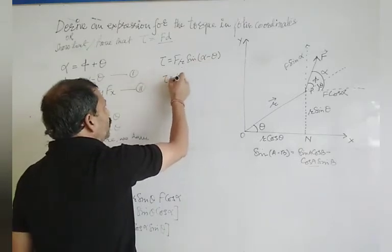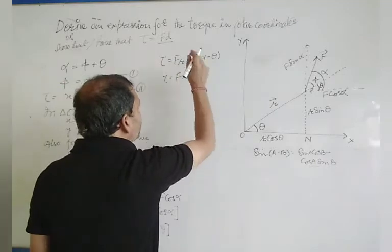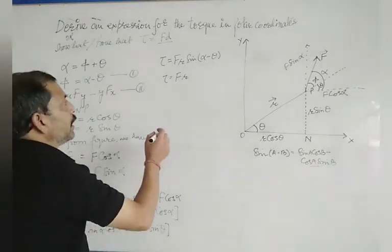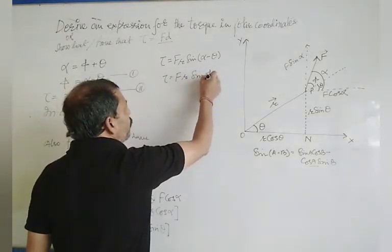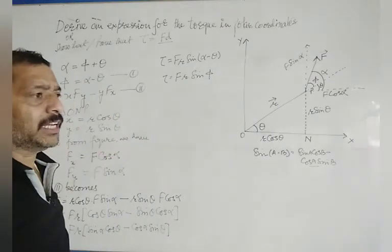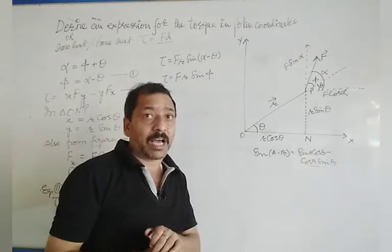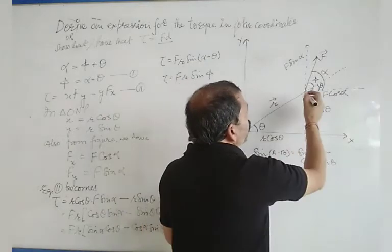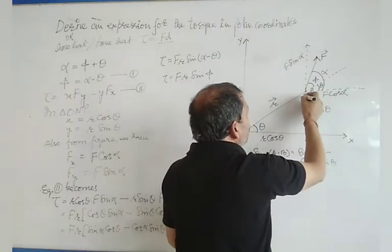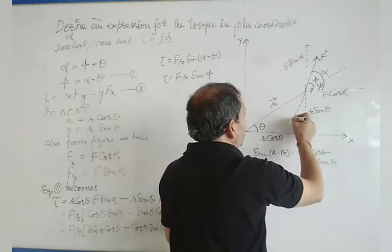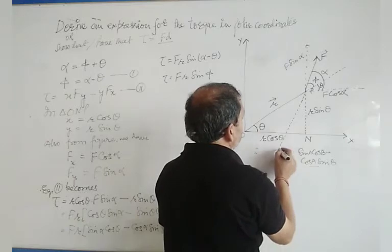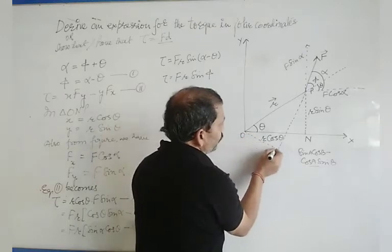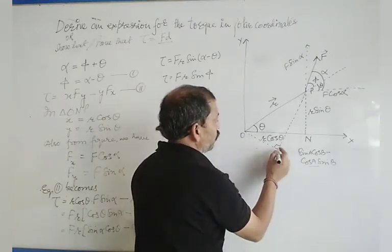And so tau is equal to F into R sin(alpha minus theta). From equation 1, alpha minus theta is equal to phi, so we write R sin phi. Now we will see what is R sin phi. We will do this: this force F, its direction we reproduce downward. And from here draw an altitude perpendicular to it. This is 90 degrees. Let's name this point M.